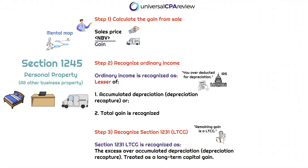In step one of our mental map, we calculate the gain from the sale in the current year — the sales price over the net book value. In step two, we're not applying the five-year look-back rule. Section 1245 simply recaptures and recognizes ordinary income as the lesser of the accumulated depreciation for that asset or the total gain that is recognized.